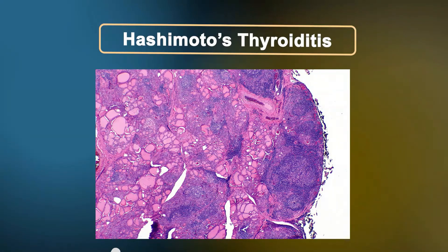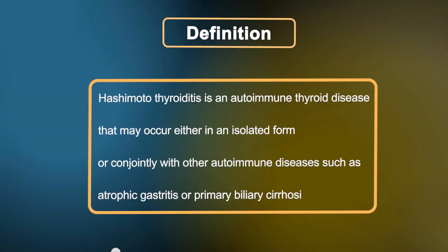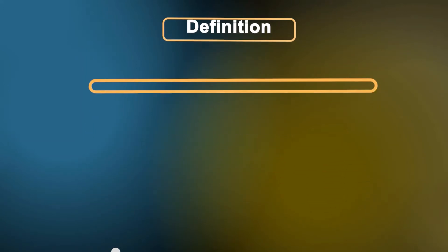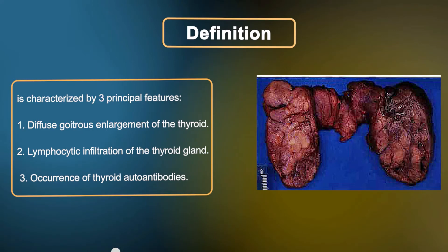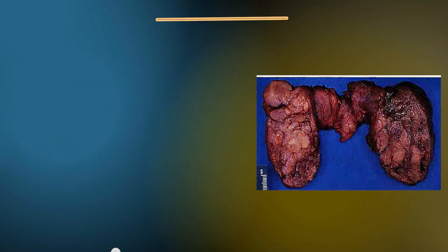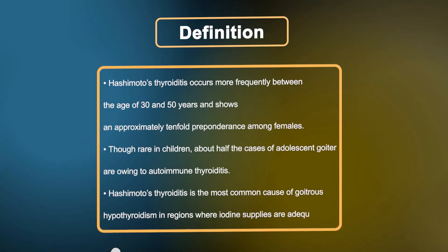Hashimoto's thyroiditis is an autoimmune thyroid disease that may occur either in an isolated form or conjointly with other autoimmune diseases such as atrophic gastritis or primary biliary cirrhosis. It is characterized by three principal features: one, diffuse goitrous enlargement of the thyroid; two, lymphocytic infiltration of the thyroid gland; three, occurrence of thyroid autoantibodies.